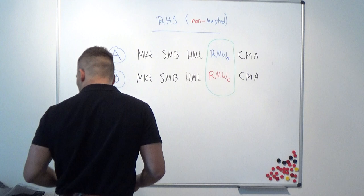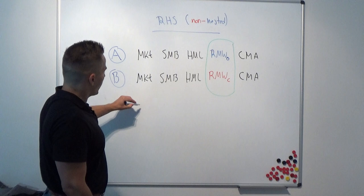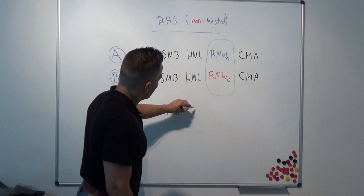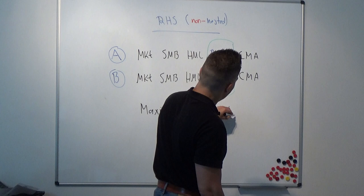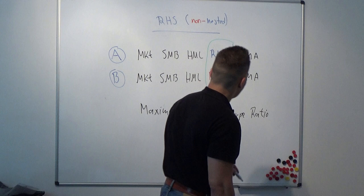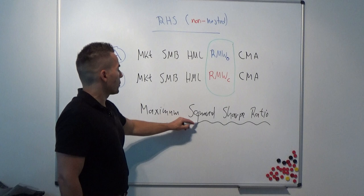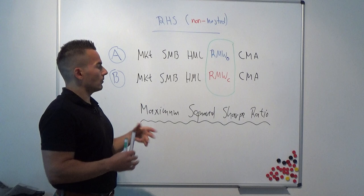What Fama and French propose is to investigate which of these models has the higher maximum squared Sharpe ratio. The maximum squared Sharpe ratio is very much related to — and almost the same as — what we discussed earlier.